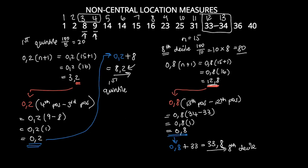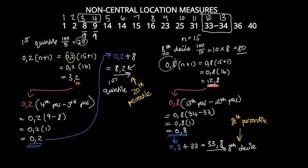These can also be expressed as percentiles: the first quintile is the 20th percentile, and the eighth decile is the 80th percentile. Whether a question asks for the eighth decile or the 80th percentile, it's the same thing — you simply divide by 100 to get your decimal. Likewise, the first quintile and the 20th percentile are the same thing.